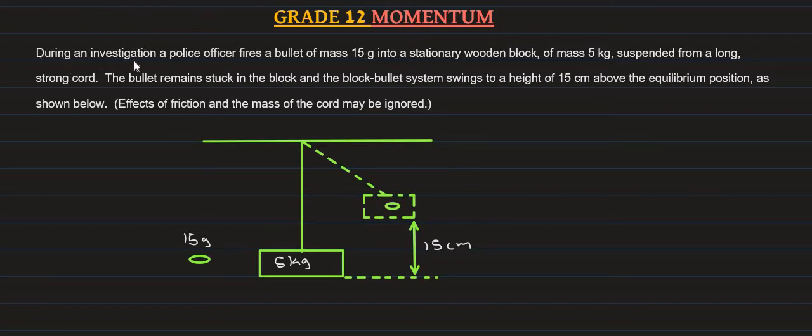During an investigation, a police officer fires a bullet of mass 15 grams into a stationary wooden block of mass 5 kg, suspended from a long, strong cord. The bullet remains stuck in the block, and the block-bullet system swings to a height of 15 cm above the equilibrium position, as shown below. Effects of friction and the mass of the cord may be ignored.